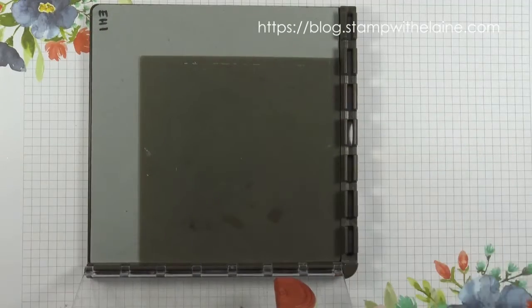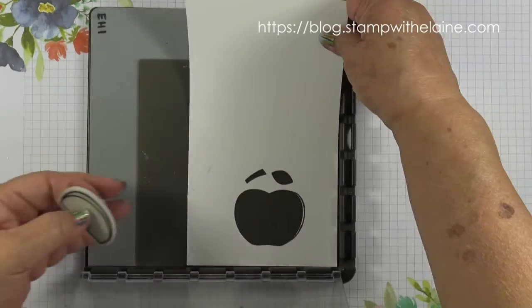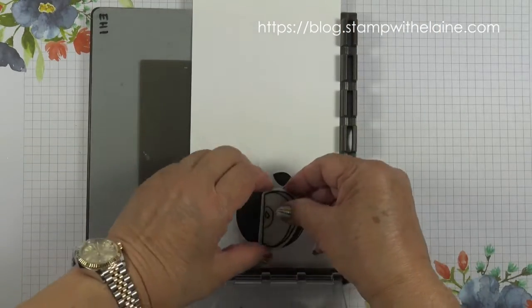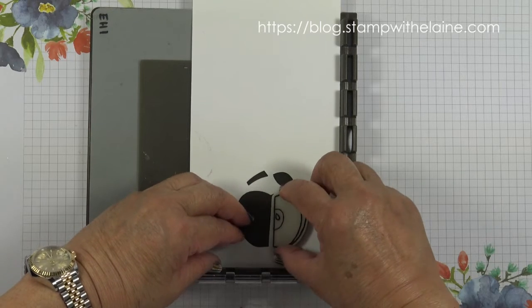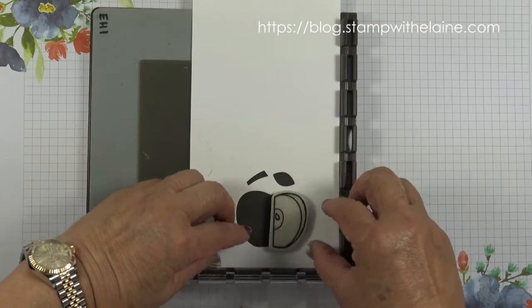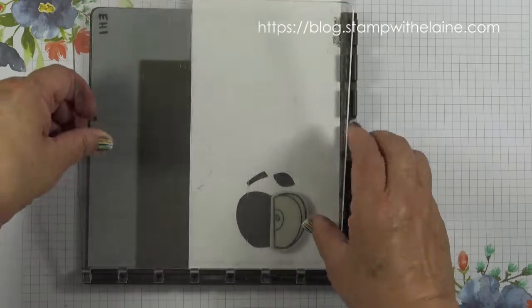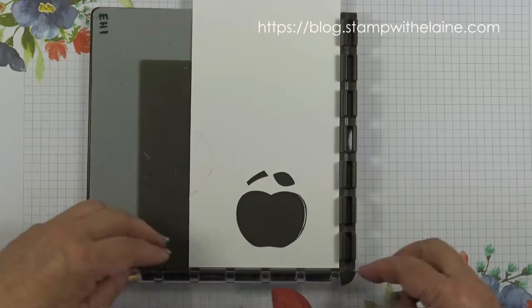I need the Stamparatus in order to do some reverse stamping. I've created a template by just punching out an apple with the apple builder punch. Then I'm going to place my stamp in there and you will feel that it's in the right position. Put your stamp down and then pick it up with the acrylic plate and you're good to go.